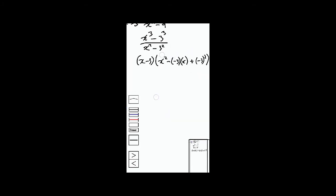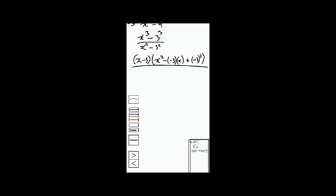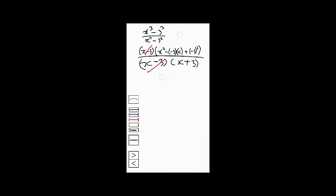Then down we are going to have a difference of two squares, and that is (x minus 3) and (x plus 3). From there we can cancel similar factors, and then we remain with x squared plus 3x plus 9, divided by x plus 3.